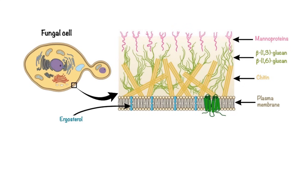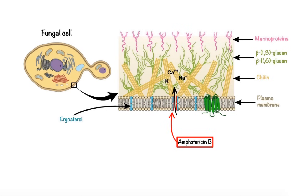One of them is a broad-spectrum antifungal drug called Amphotericin B. Amphotericin B works by binding to ergosterol in the fungal cell membrane and forming pores that cause rapid leakage of intracellular ions, ultimately leading to fungal cell death.